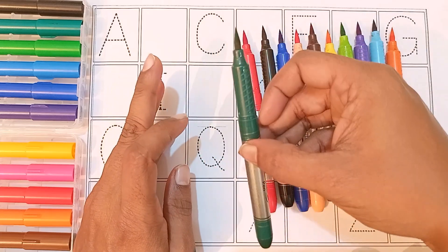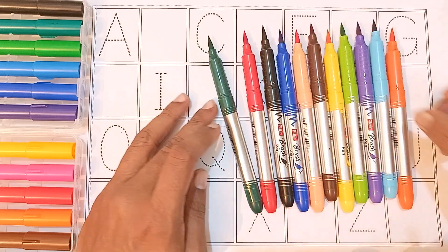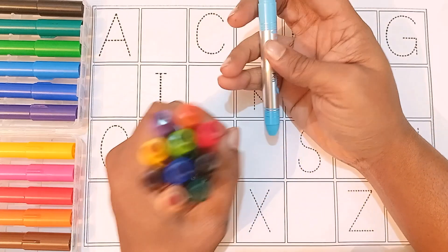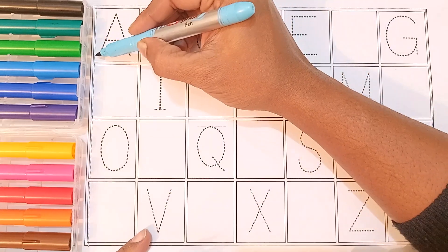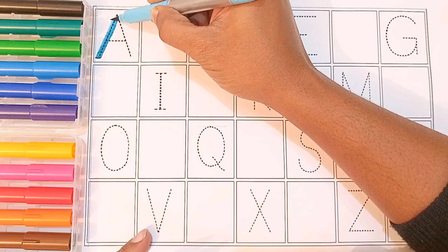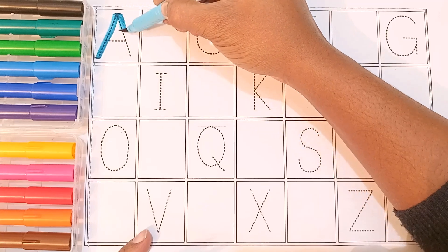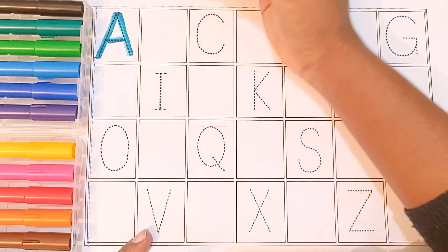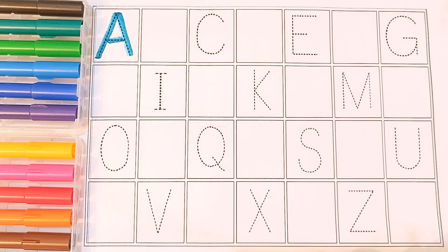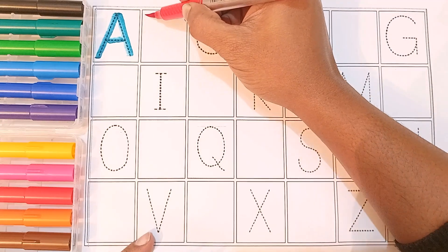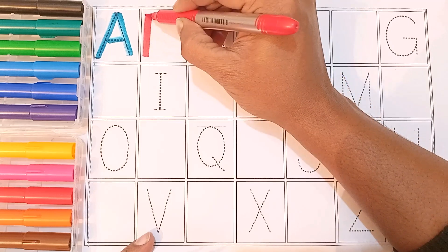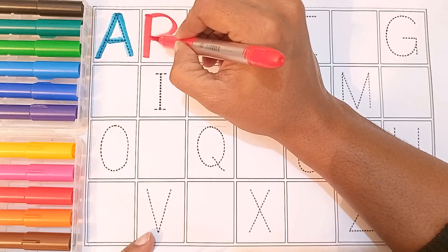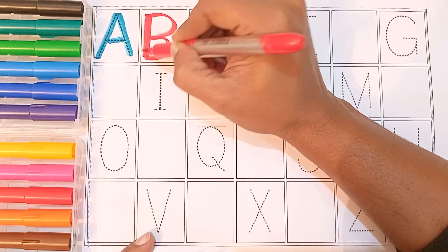Let's start reading and writing. A, B, C, D. A for apple. B for banana.